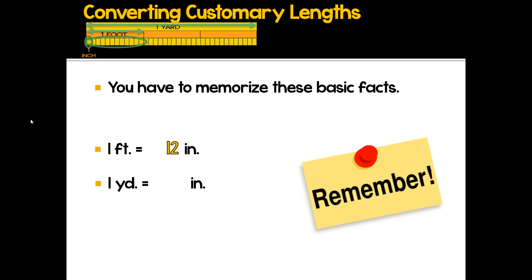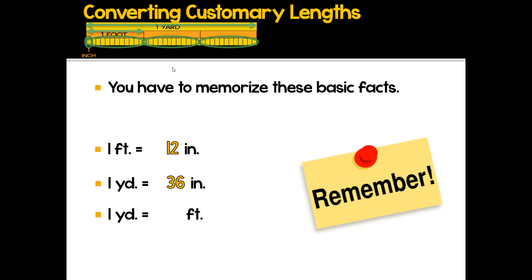Moving on to a yard — you can see up at the top that a yard is the longest one that can fit on the screen. One yard is how many inches? It's 12 inches, then another set of 12, and another set of 12. So three sets of 12 inches make a yard — that's 36 inches. One yard is also three feet.